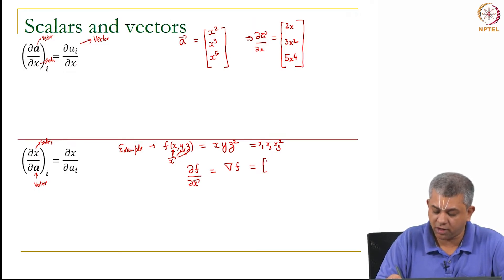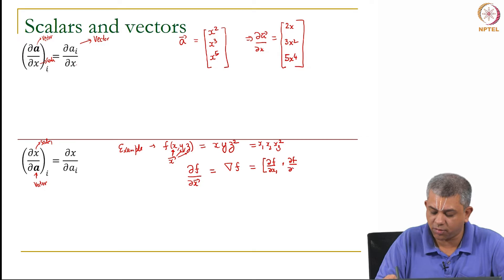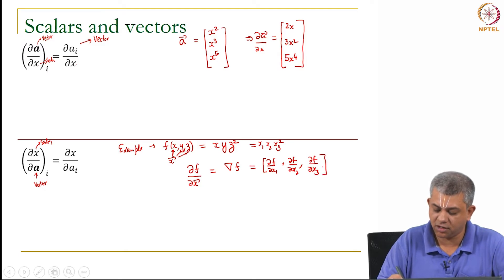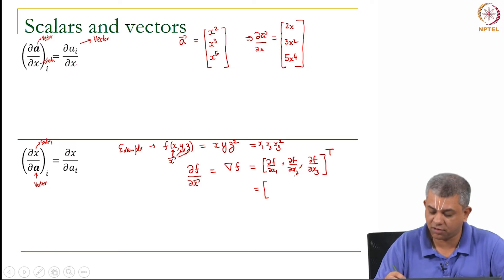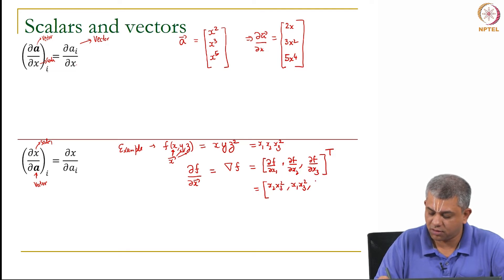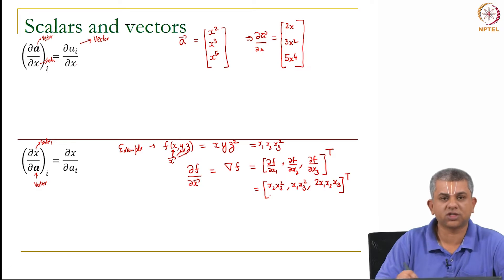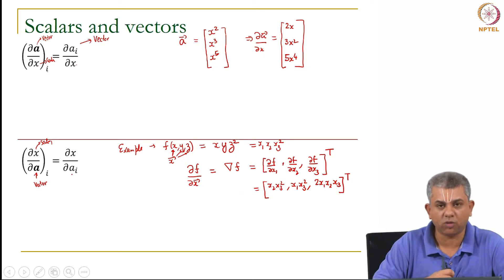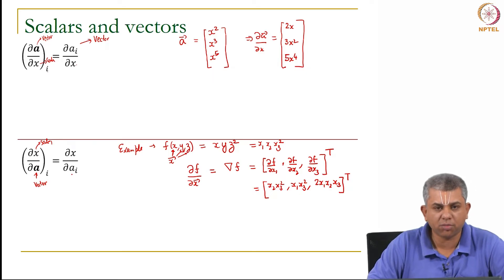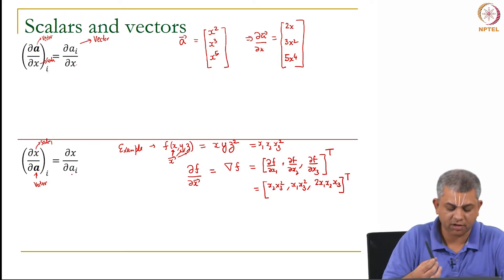The gradient vector has components: del f / del x1, del f / del x2, del f / del x3 (with a transpose, turning the row vector into a column vector). For the example given, del f / del x1 = x2·x3², del f / del x2 = x1·x3², and del f / del x3 = 2·x1·x2·x3. So the gradient is a prototypical example of scalar differentiation with respect to a vector, and it results in a vector.